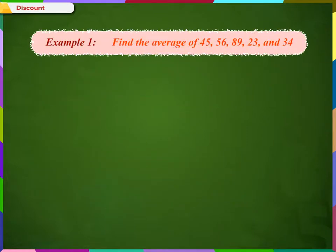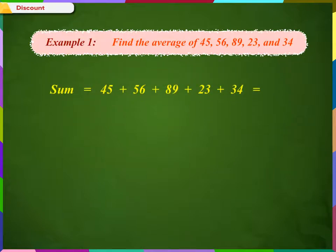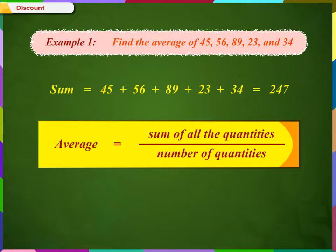Let us calculate the average of quantities with these few examples. Find the average of 45, 56, 89, 23, and 34. The sum of the numbers is 45 plus 56 plus 89 plus 23 plus 34, which equals 247. Average is given by sum of all quantities divided by the number of quantities. Therefore, average equals 247 divided by 5, which equals 49.4.